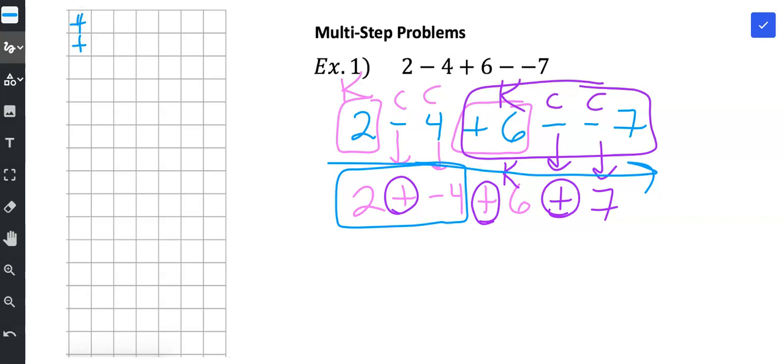So I have 2 yellow integer chips. I'm going to show addition signs. I have 1, 2, 3, 4 negatives. Positive 2 and negative 2. That's a zero pair. And I'm left with my answer, which is negative 2.